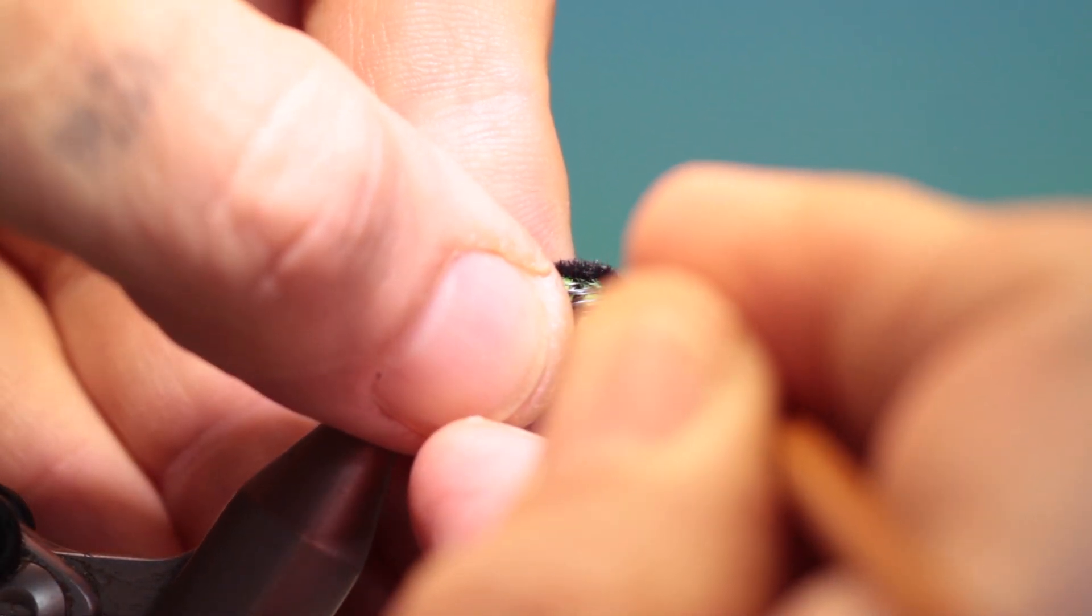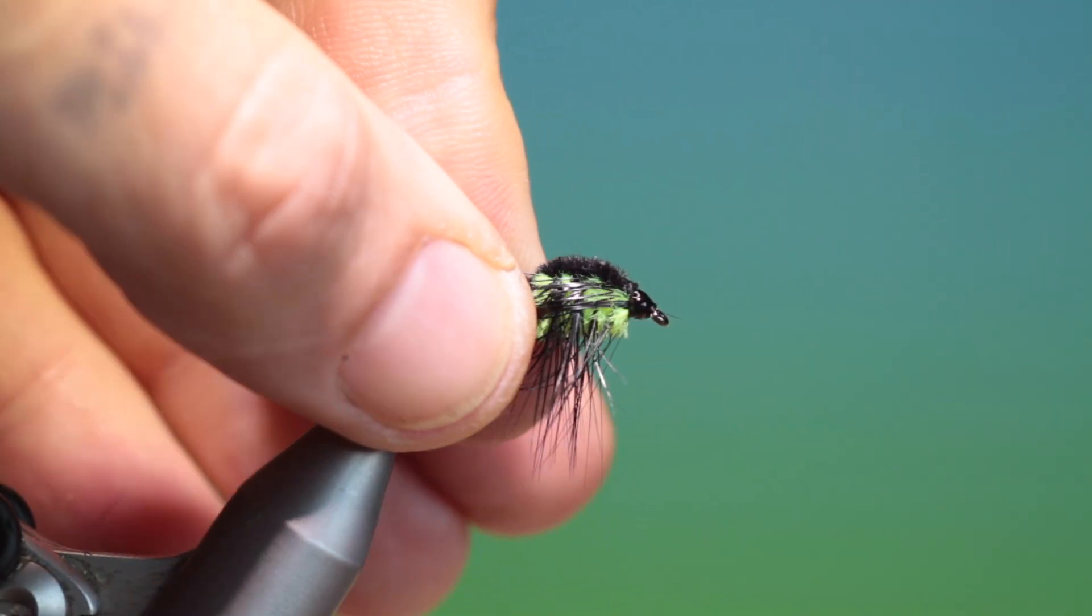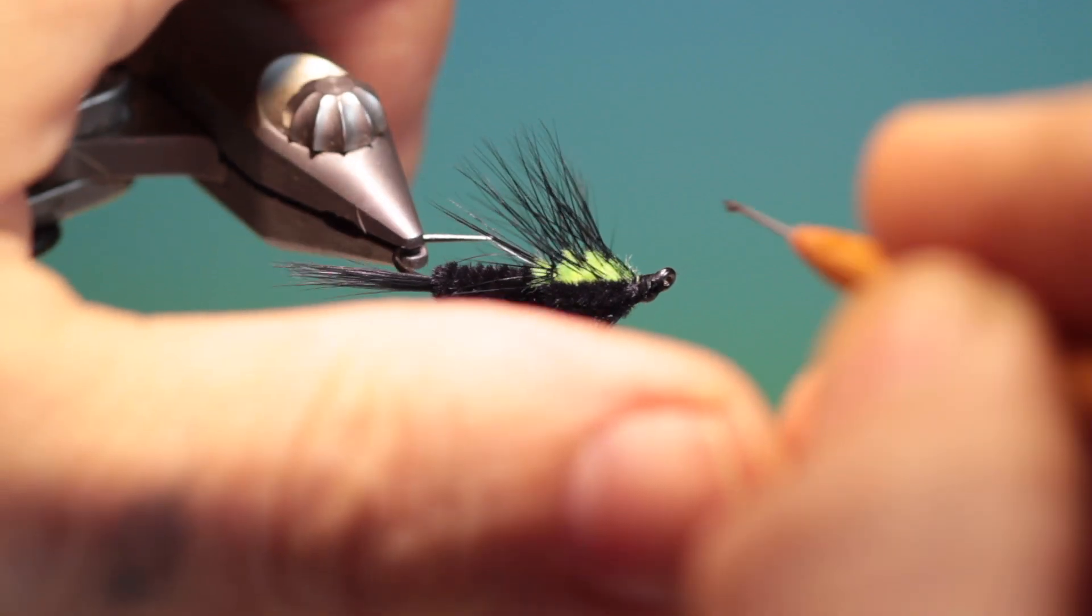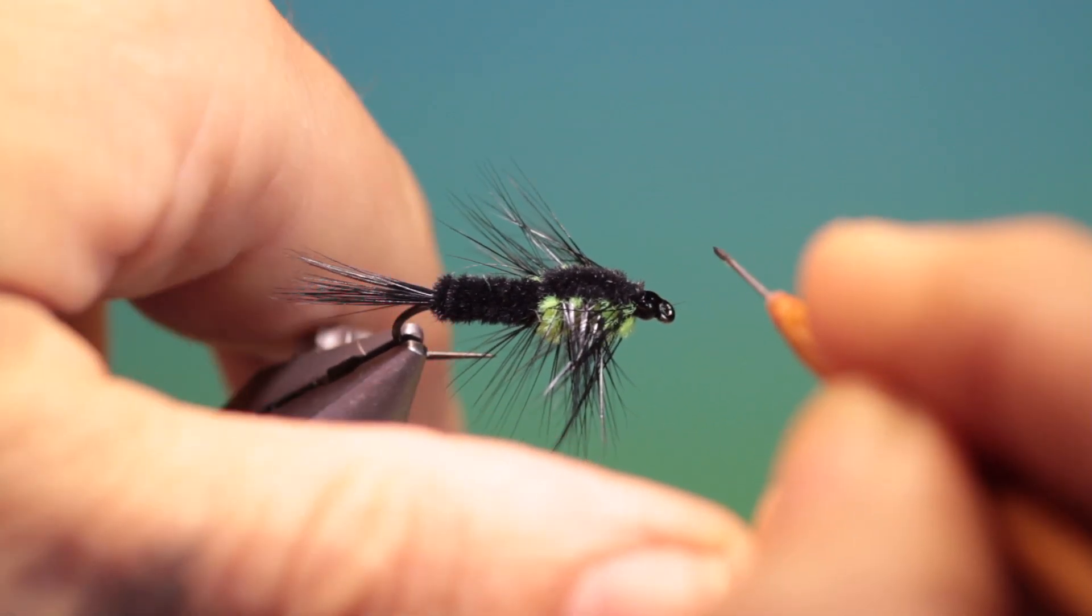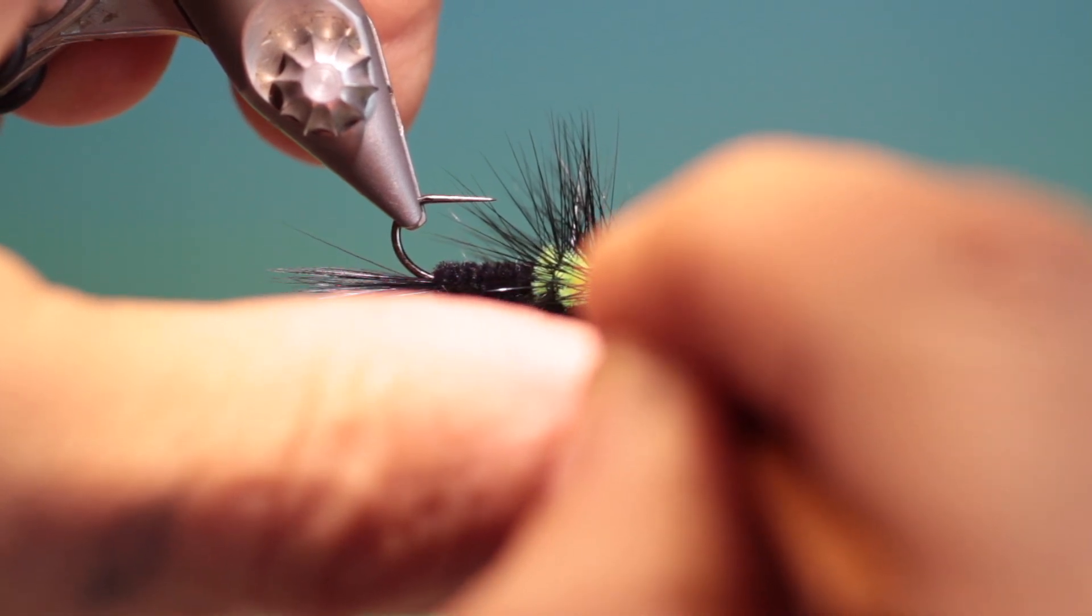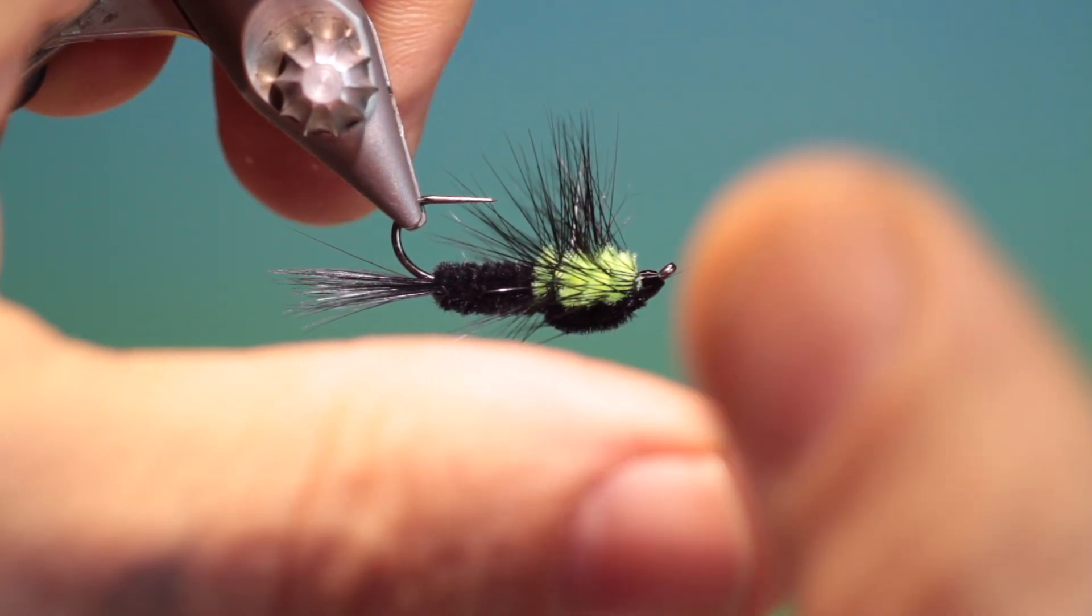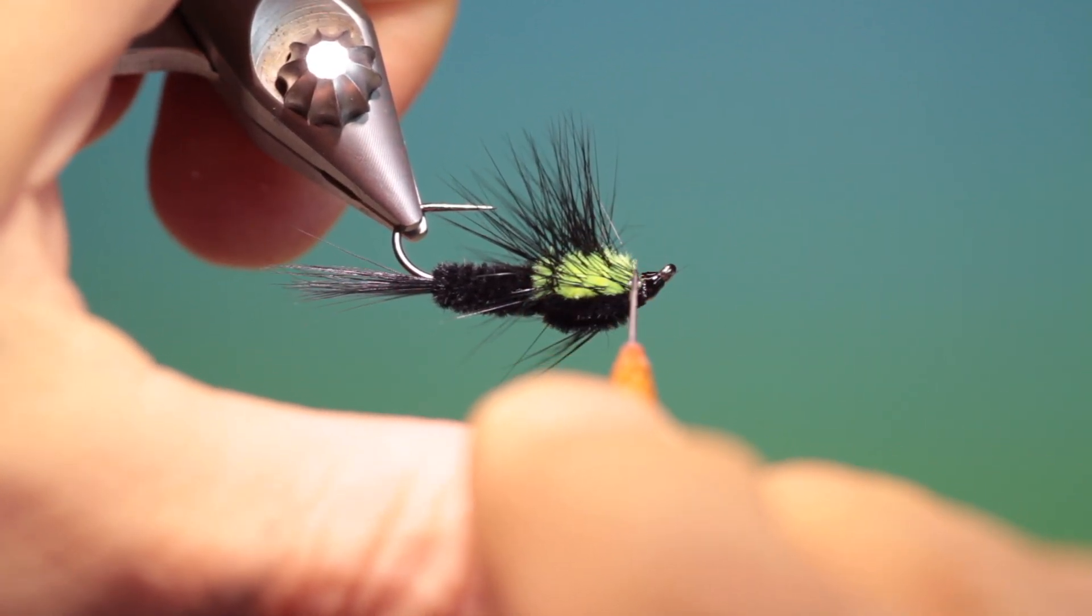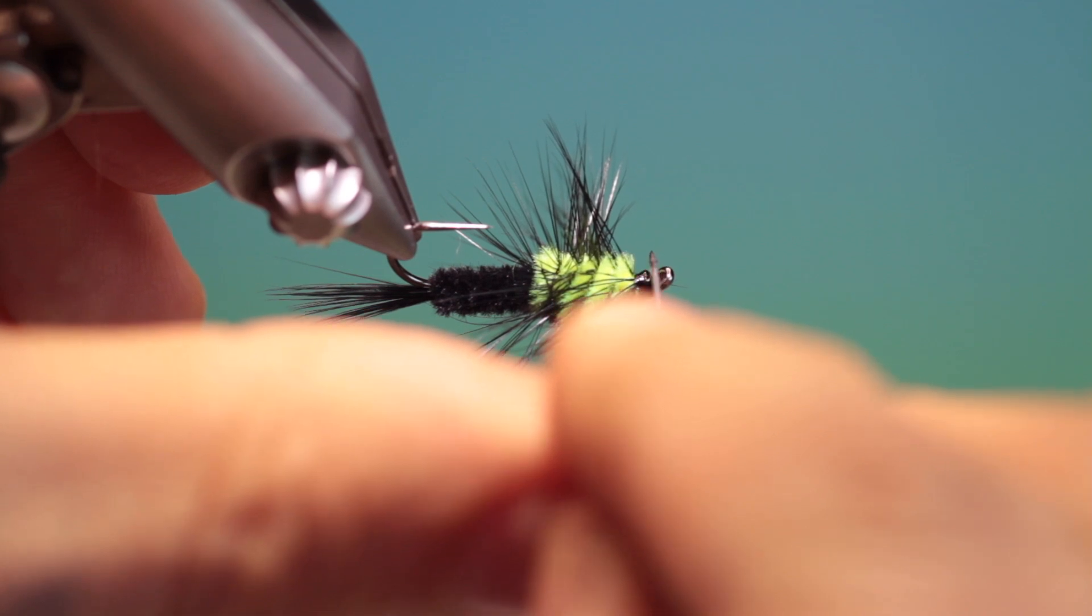Then we can take a drop of varnish and give the head a nice coat. Take your time when you're varnishing. It's good to hold your hand, your left hand, on the vise. Put your thumb out and then you can rest your hand, your varnishing hand, on your thumb so you don't go all over the place.